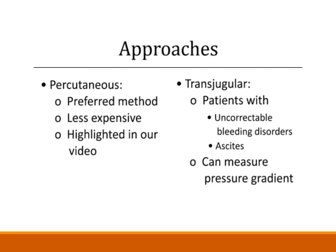There are two approaches to liver biopsy. The first is the preferred percutaneous approach — it's less expensive, and this is the one that's going to be highlighted in our video. The second is a transjugular approach, which is typically reserved for patients with bleeding diathesis or ascites. There's less of a bleeding risk with this procedure since we're not puncturing the liver capsule. One advantage of the transjugular approach is that it allows us to measure the pressure gradient across the liver.